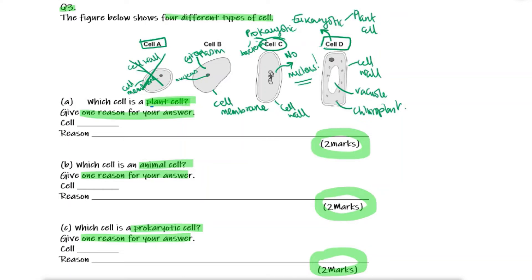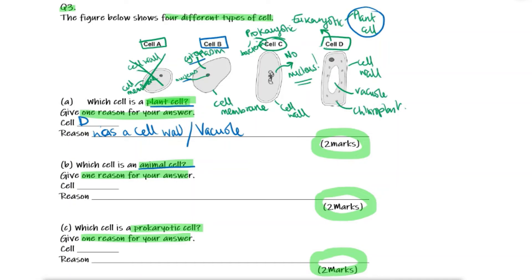Looking at our questions: which cell is a plant cell? We've identified cell D as the plant cell — so we write D, and the reason is it has a cell wall, or we can write it has a vacuole. Which cell is an animal cell? We've identified cell B as the animal cell, because it has no cell wall, and has a nucleus, cytoplasm, and cell membrane.